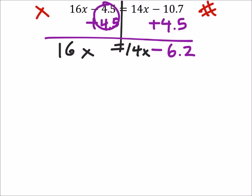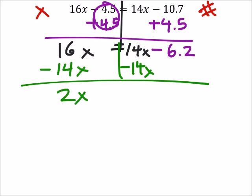Now I've got a 14x that's on the wrong side of the equal sign. So I've got to get rid of it by subtracting 14x from both sides, which leaves me with 2x equals, and I still got that negative 6.2 because this became a zero.